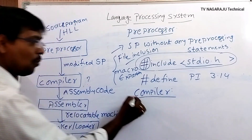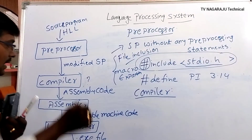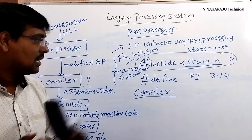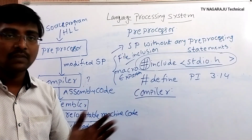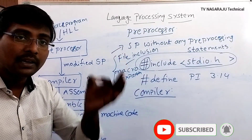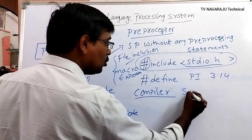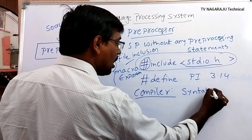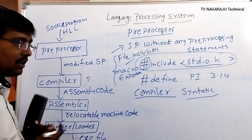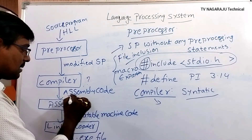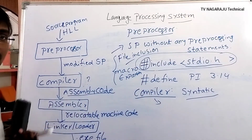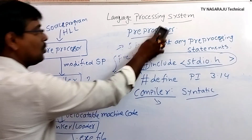The compiler checks the syntactic rules of the programming language. For example, in C, each line must end with a semicolon, and more than one variable must be separated by a comma. These syntactic rules of the programming language are verified, and the compiler produces assembly code as output.